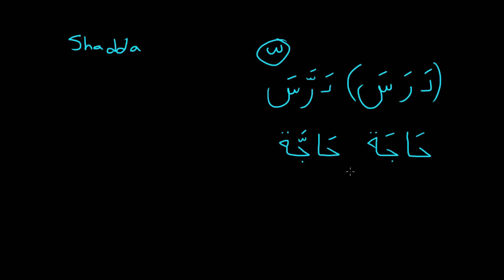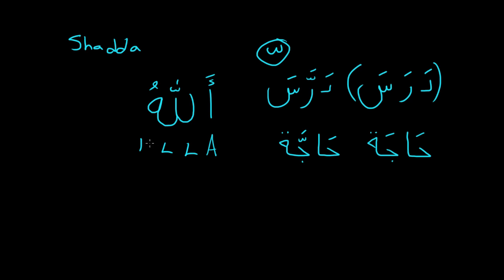The Shadda is also present in a very common word — 'Allah,' which you might have noticed. This word is: an Alif, Lam, Lam, Ha. But that second Lam actually has a Shadda on it, so it's almost like there are three Lams. The word 'Allah' actually has a very unique pronunciation in the Arabic language: 'Allah,' 'Allah.'